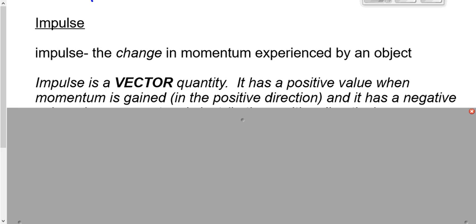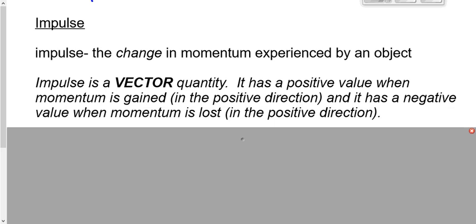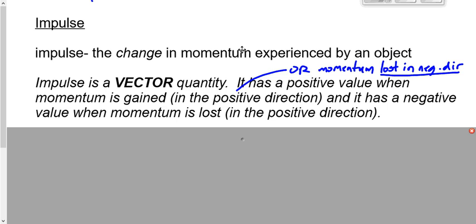Conversely, I would have a negative impulse if I lose momentum in the positive direction or if I gain momentum in the negative direction. If I slow down moving to the right, that's a negative impulse. If I speed up moving to the left, that's a negative impulse. Impulse is a positive value when momentum is gained in the positive direction or lost in the negative direction, and a negative value when it's lost in the positive or gained in the negative direction.